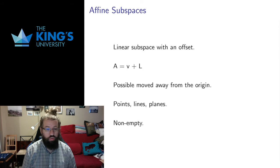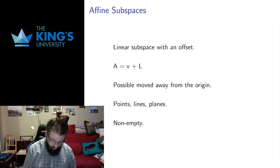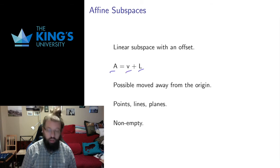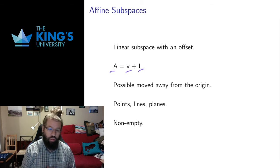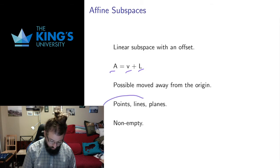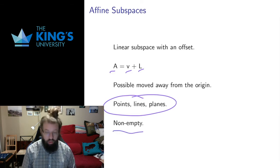We can also have the notion of an affine subspace, and this is a linear subspace with an offset. In the previous video I also defined an offset span — a span shifted by a vector. An affine subspace is a linear subspace L shifted by some vector v. This makes it possible to move away from the origin, because linear subspaces have to go through the origin, but adding a vector v can move the object away from the origin. These are still flat, infinitely extended objects, but now any point, line, or plane need not pass through the origin. They still have to be non-empty.